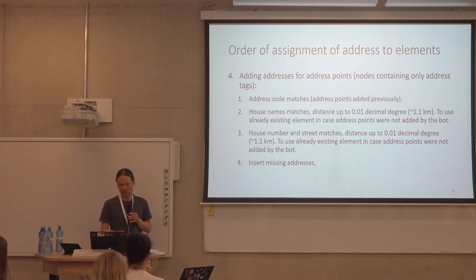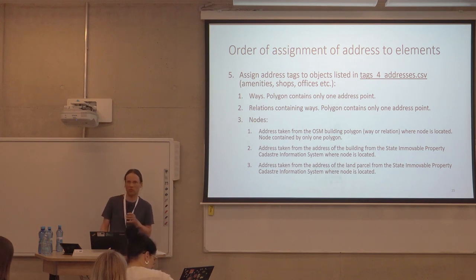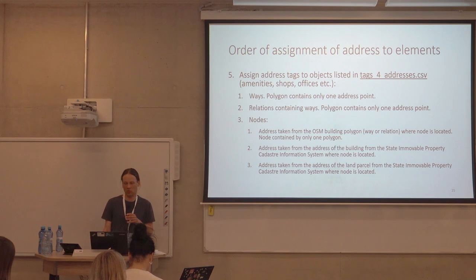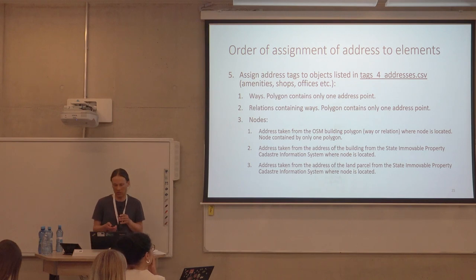The next step is to insert missing addresses. To address complexity, addresses are also assigned to objects listed in issues on GitHub — essentially shops, offices, etc. — because it would not be ideal to add addresses only to buildings and address points while ignoring all amenities and manually-added user data. The first sub-step is for ways where the polygon contains one address point; the next is for relations containing ways with the same condition; the third is for nodes. The address is taken from the OpenStreetMap building polygon the node is located in, then from a building in the state immovable property information system, and finally from a land parcel.